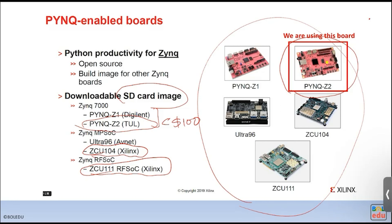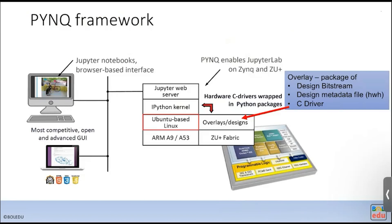For new kernel function development, you generate the overlay and download it to the FPGA card via the SD card, then use the newly generated overlay.